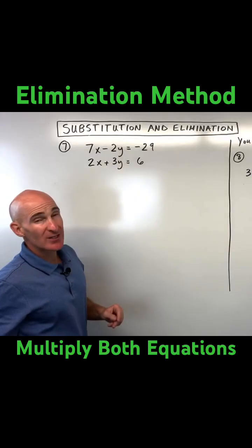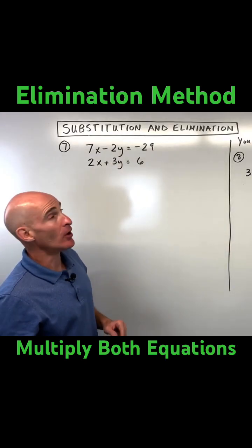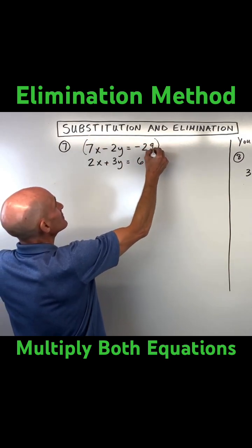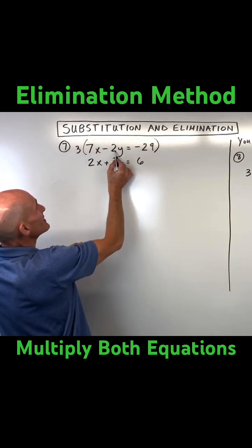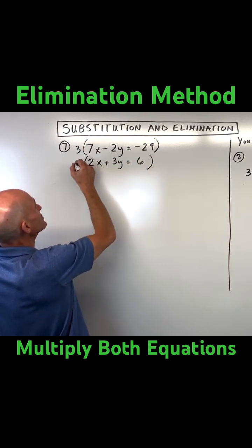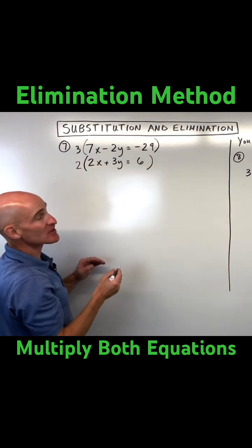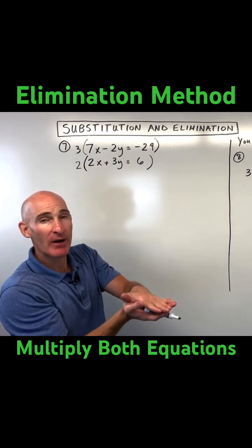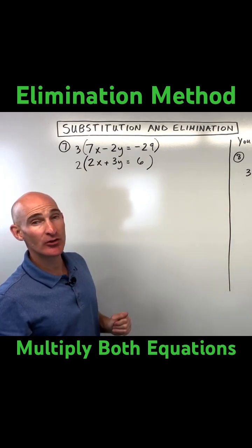Notice that 2 and 3 both go into 6 — that's the least common multiple. So I'm going to multiply this top equation by 3, that'll give us a negative 6y. I'm going to multiply this bottom equation by 2, that'll give us a positive 6y. Then when I add that negative 6y and positive 6y together, they'll cancel each other out.